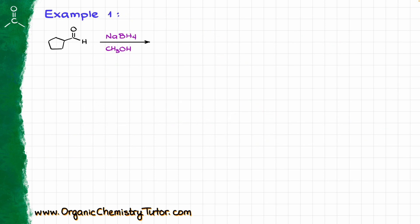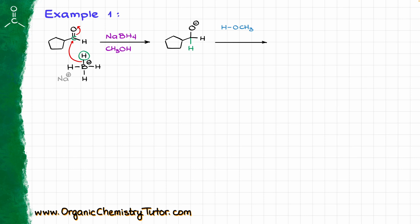For my first example, I have the reaction between cyclopentane carbaldehyde and sodium borohydride in methanol, which is our solvent. I will draw my sodium borohydride and show the nucleophilic attack from the borohydride onto my carbonyl, making a new bond between my hydrogen and the carbon of the carbonyl. As a result of this attack, we are going to get the following alkoxide intermediate, which is going to grab the proton from our solvent, methanol in this case. The oxygen reaches out, grabs that proton from our methanol, and gives us the final product. So when we are reducing the aldehyde, we are going to end up with the primary alcohol as the final product.